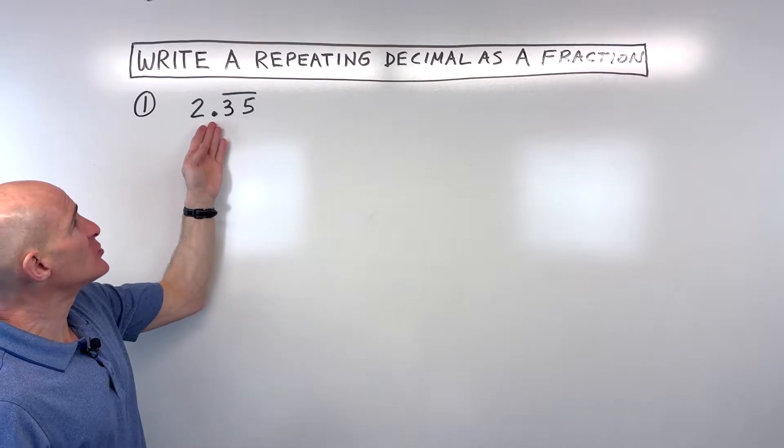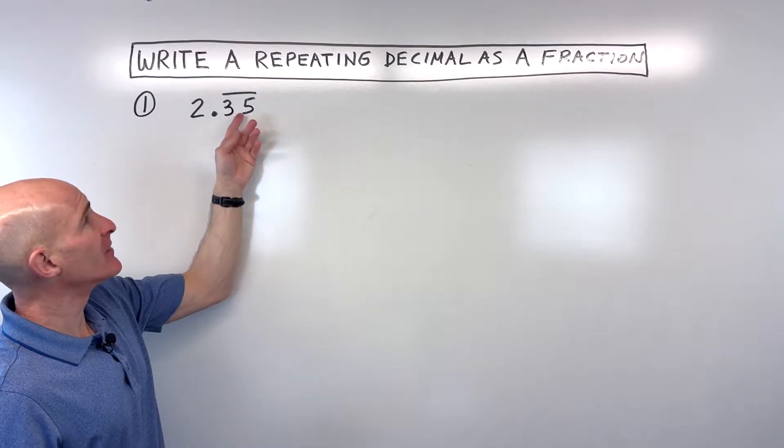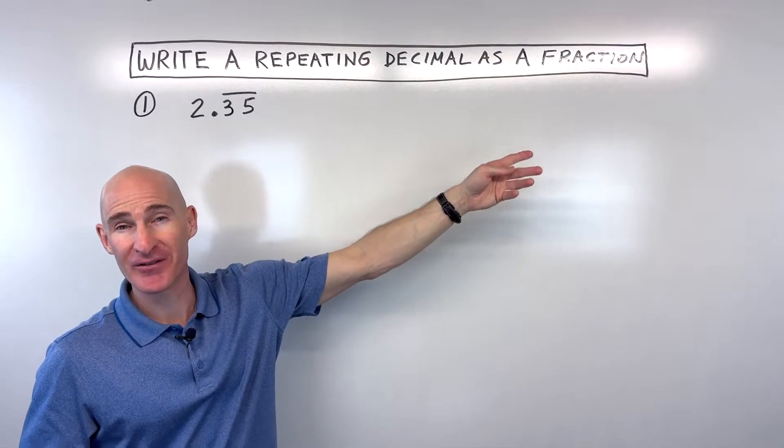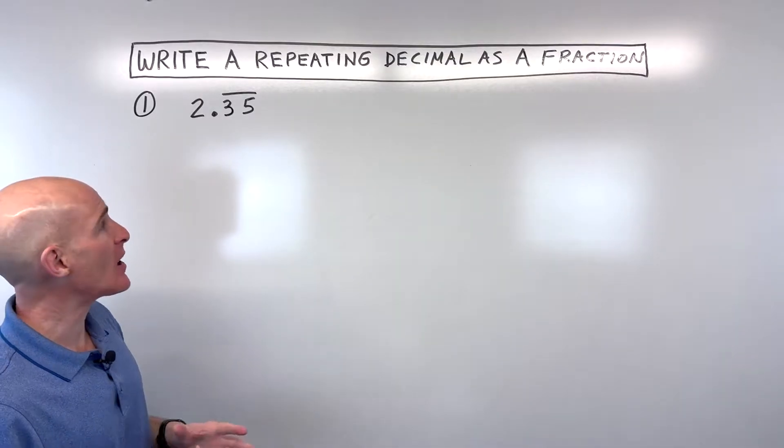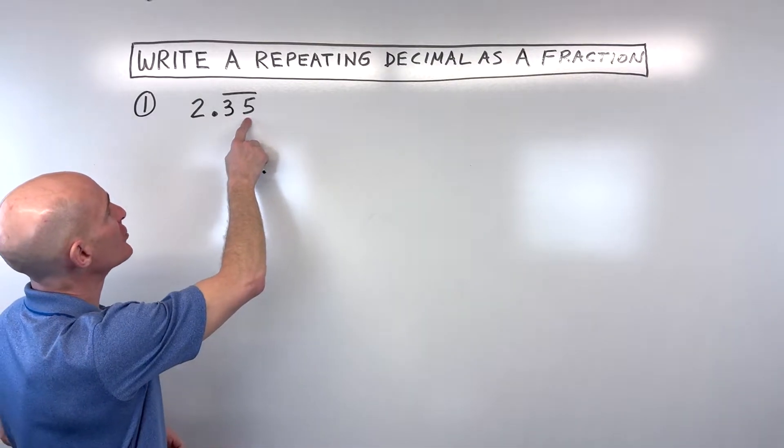So this first example, we've got 2 and 35, 35, 35, 35, 35. It keeps repeating, right? So how do we change this into a fraction or a rational number?